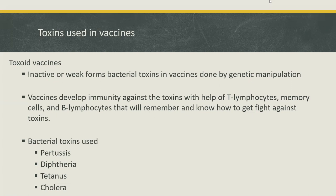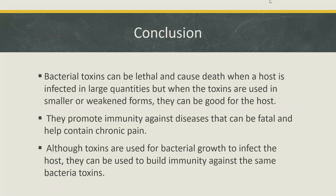The bacterial toxins addressed in vaccines include pertussis, diphtheria, tetanus, and cholera. Bacterial toxins can be lethal and cause death when a host is infected in large quantities, but when used in smaller or weakened forms, they can be beneficial. They promote immunity against diseases that can be fatal and help contain chronic pain. Although toxins are used for bacterial growth to infect the host, they can also be used to build immunity against the same bacterial toxin.